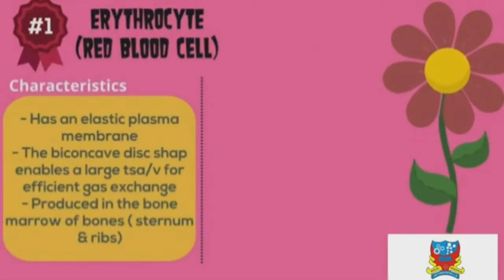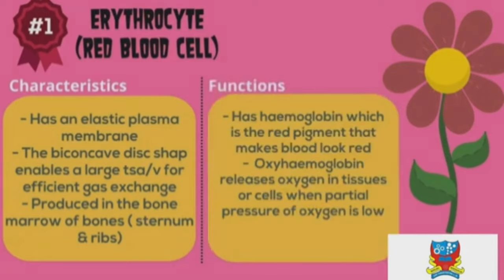Erythrocytes have an elastic plasma membrane and a biconcave disc shape that enables a large total surface area per volume ratio for efficient gas exchange. They are produced in the bone marrow of bones such as the sternum and ribs. Their function involves haemoglobin — the red pigment — and oxyhaemoglobin releases oxygen in tissues when the partial pressure of oxygen is low.